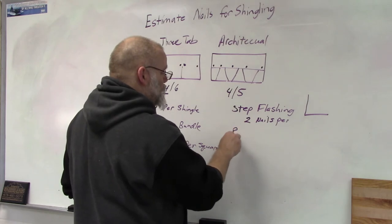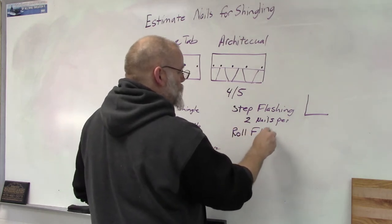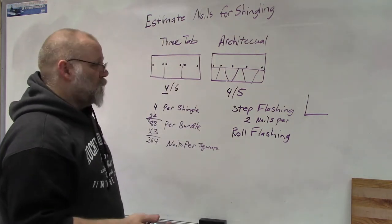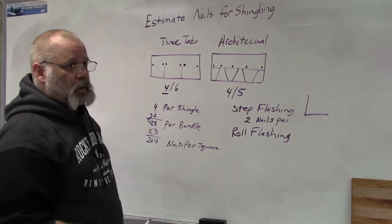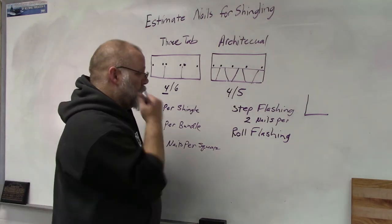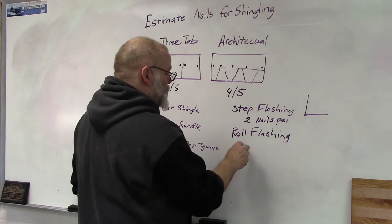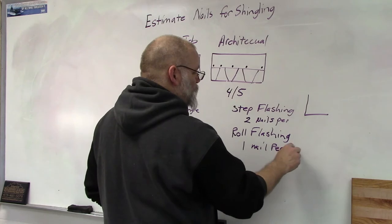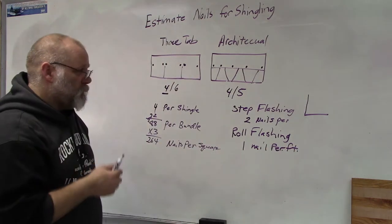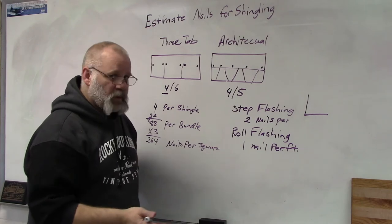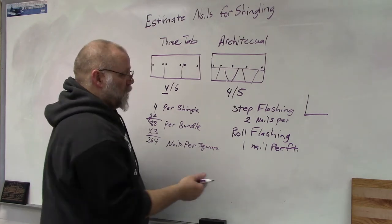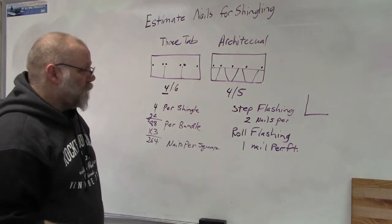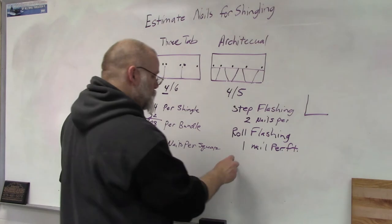If you're doing roll flashing, that's that galvanized flashing that comes in a roll and you can bend it or you can put it on flat or however you want it. Usually you're going to figure about one nail per foot of flashing. So if you're going to put on 50 feet of flashing, you're going to need at least 50 nails for the flashing.